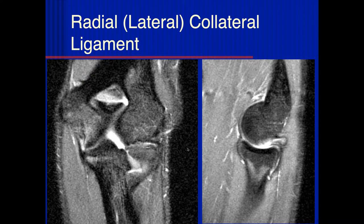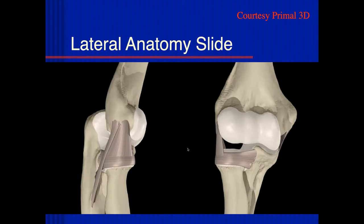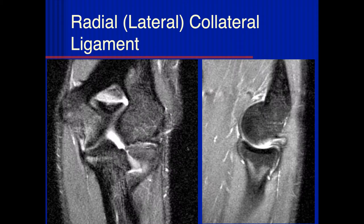Most of the stability in terms of morphology on the lateral side is actually because of the bone and cartilage morphology of the lateral elbow — over 50 percent, maybe closer to 90 percent. The bone and cartilage construction is more important for stability than the capsule and ligaments.